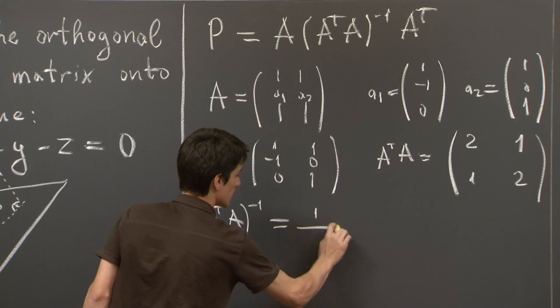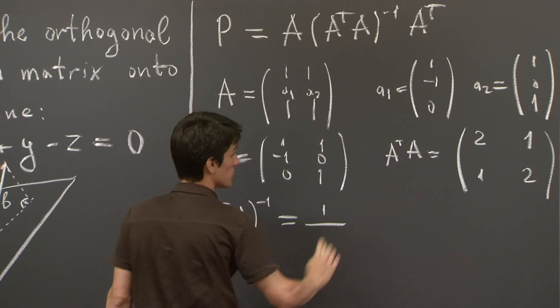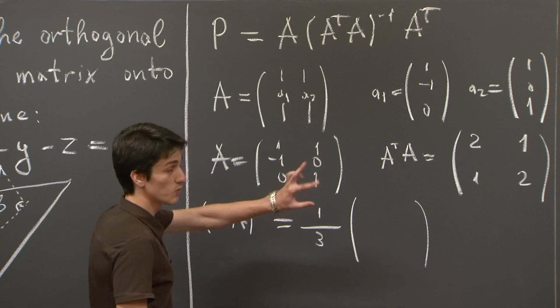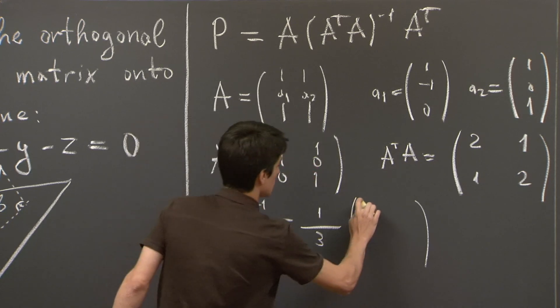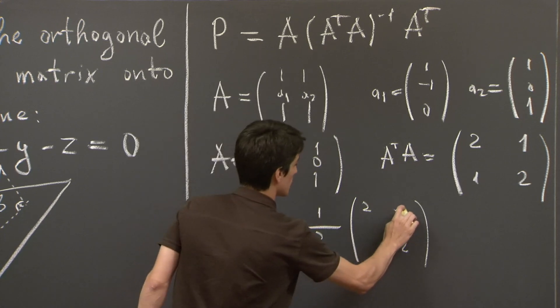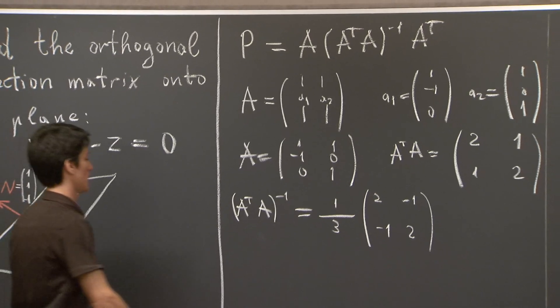Using the familiar formula, 1 over the determinant, 2 times 2 minus 1 is 3. And so we switch the diagonal entries. And we flip the signs of the diagonal ones.